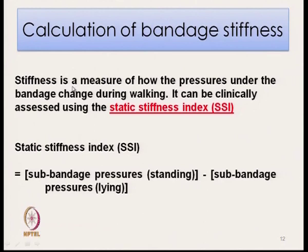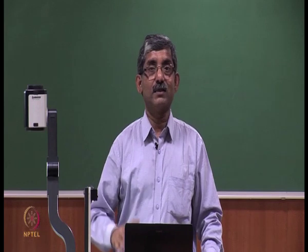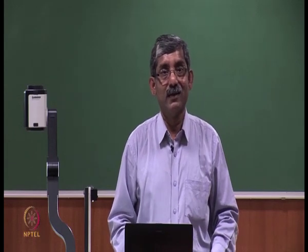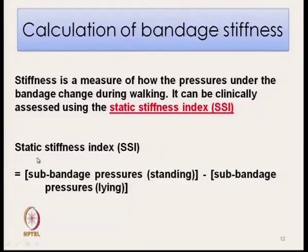Stiffness is another parameter. Calculation of bandage stiffness is a measure of how the pressure under the bandage changes during walking. If a person is lying and then stands, there will be a change in pressure. That change in pressure is expressed as the static stiffness index, which is clinically assessed as the difference between sub-bandage pressure when a person is standing and sub-bandage pressure when a person is lying.